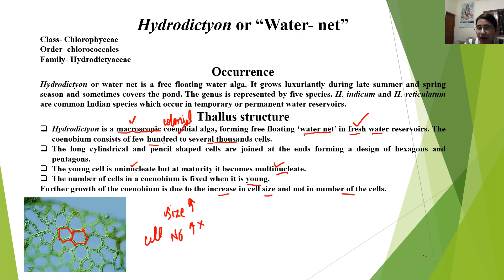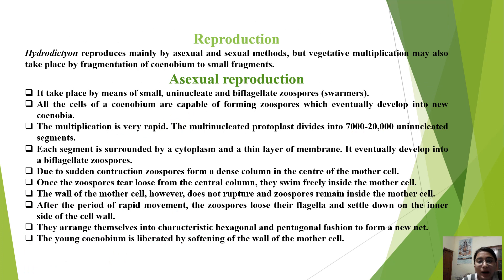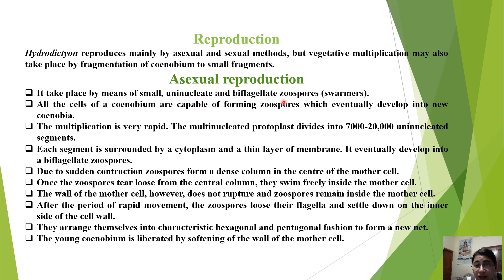Hydrodictyon reproduces by asexual method, sexual method, and vegetative method. Vegetative multiplication can take place through fragmentation. For asexual reproduction, it takes place through uninucleated biflagellated zoospores, which we can also call swarmers. You can see the zoospores — they are small, uninucleated and biflagellated, with two flagella.